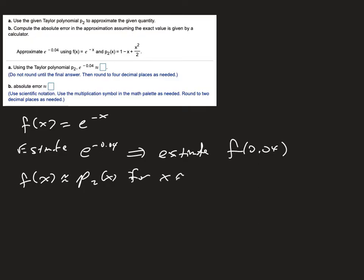The theory of Taylor polynomials tells me that my f of x is approximately my polynomial at x. Again, for x near the center, it's 0. And so I can approximate f of 0.04 by plugging in 0.04 into my polynomial, and that's 1 minus 0.04 plus 0.04 squared over 2. I believe that comes out to be 0.9608.